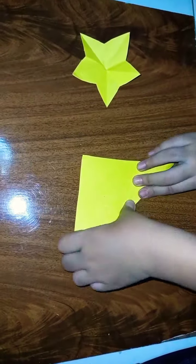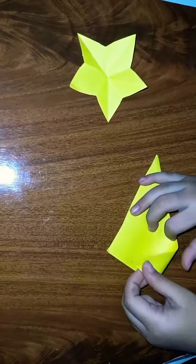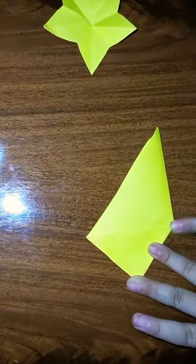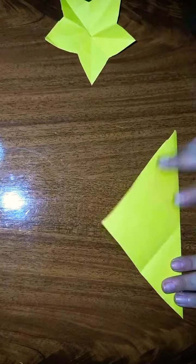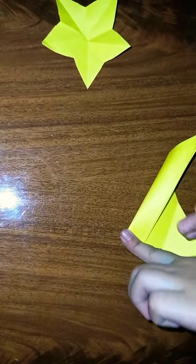So first we fold the paper in half like this. Then we will take the square and fold it in this corner like this. Then we will open it, not fold but just mark this here.